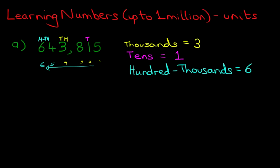How many hundreds are there? How many hundreds are there in this number? Which digit represents the hundreds? It is the third from the right. I've labelled it H. How many hundreds are there? There are eight hundreds.